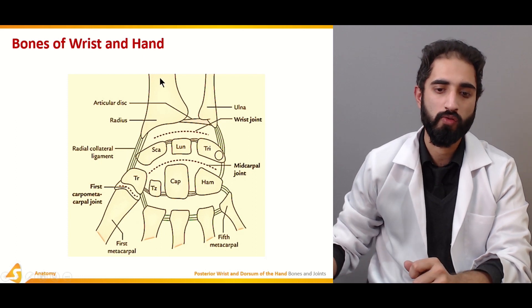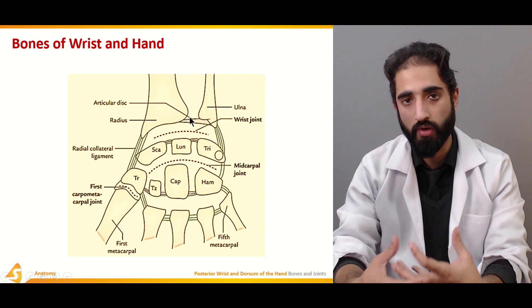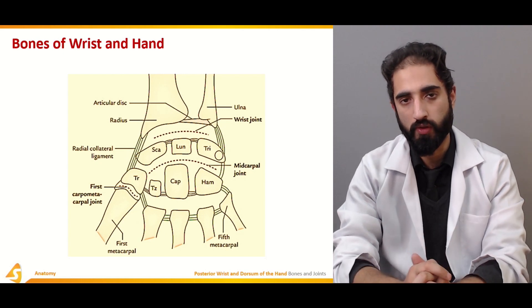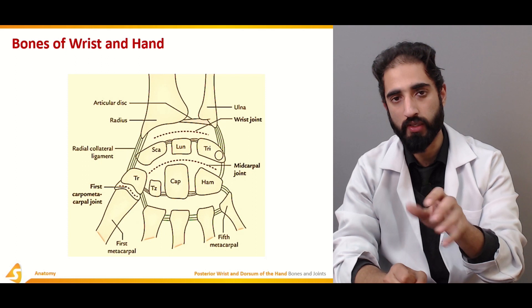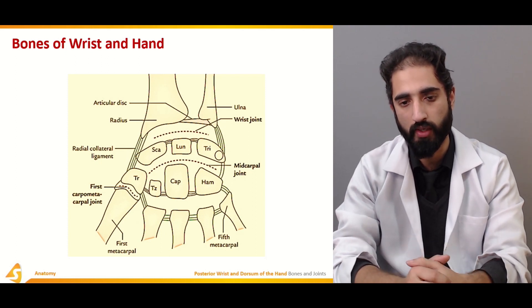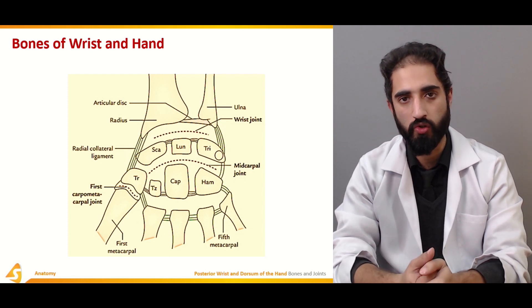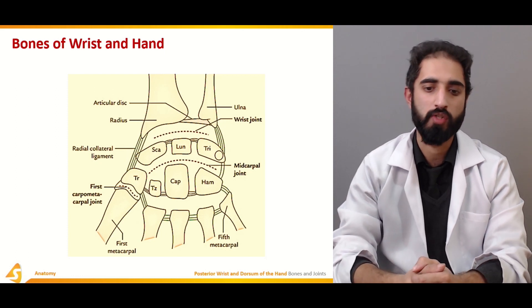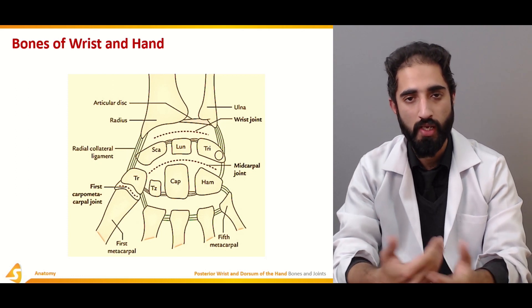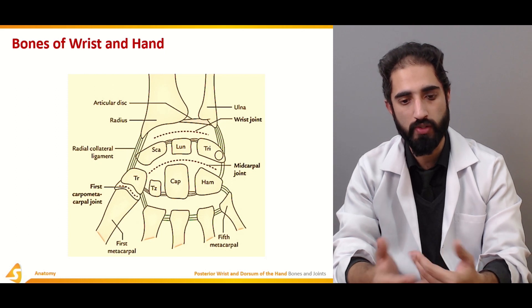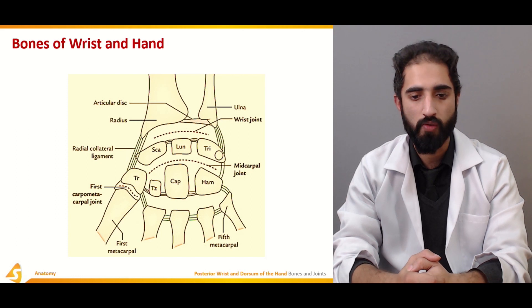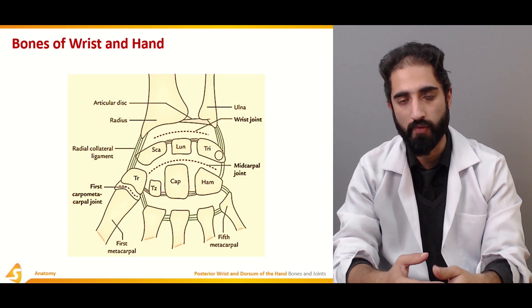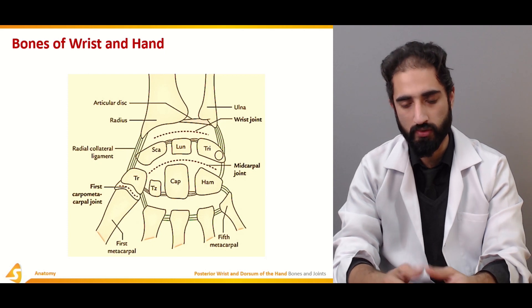The wrist joint is known as the radiocarpal joint. The ulna is not included in the joint name because it has a very small contribution at the wrist level, and even that contribution is blocked by the articular disc, so there is no direct contact of the ulna with the scaphoid, lunate, and triquetrum. After the radiocarpal joint we have the midcarpal joint, then the carpometacarpal joints, metacarpophalangeal joints, proximal interphalangeal joints, and distal interphalangeal joints.